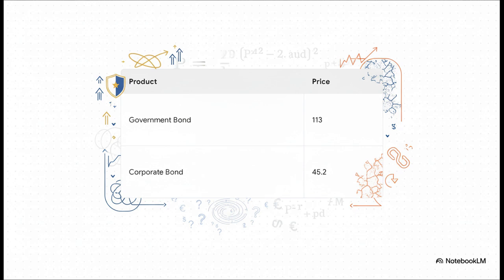One is a super safe government bond priced at $113. The other is a corporate bond priced way down at just $45.2. Now, here's the thing. They were issued at the same time and promised the exact same future payments. So what gives? Why is one so much cheaper?